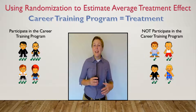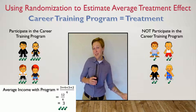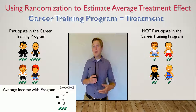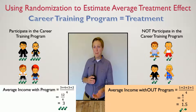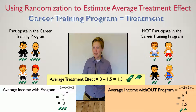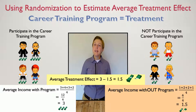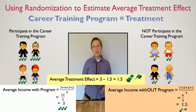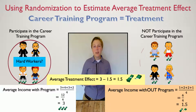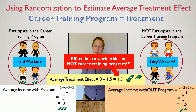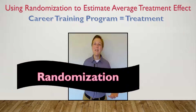The difference in the average income for those that participated in the program and those that did not participate is the average treatment effect, right? Wait, not so fast. What if those that participated in the career training program are fundamentally different than those that did not participate? For example, people that participate may be harder workers than those that choose not to participate. This is where randomization is going to fly in and save the day.